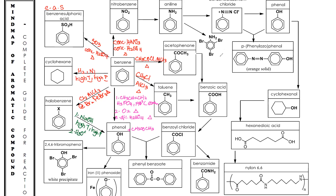Once you form phenol, it can undergo three different reactions. If you add bromine water (Br₂ in aqueous), you form 2,4,6-tribromophenol, which is a white precipitate. If you add FeCl₃, you form iron(III) phenoxide, which gives a purple solution. Phenol can also react with benzoyl chloride under alkaline conditions and reflux to form phenyl benzoate.